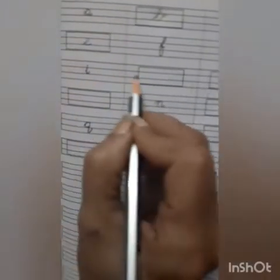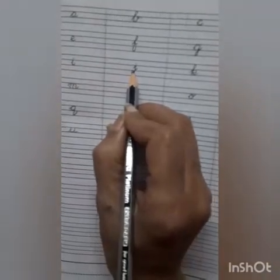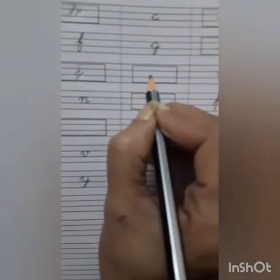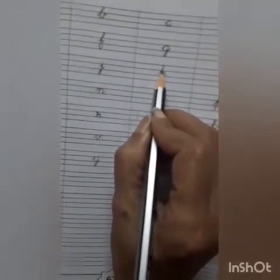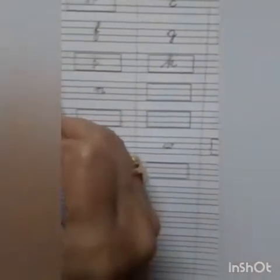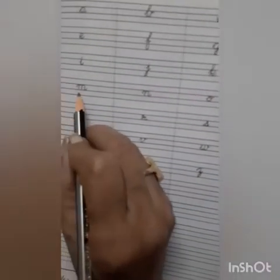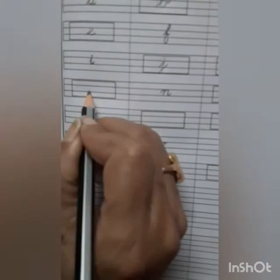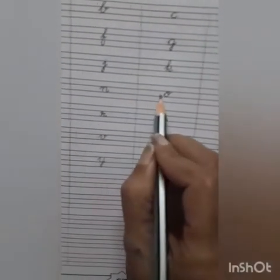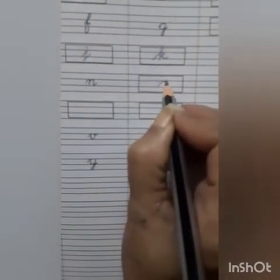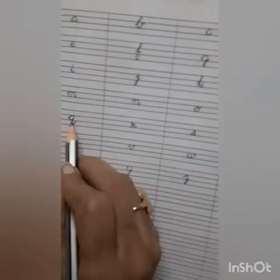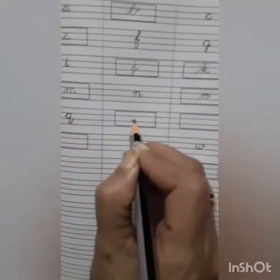H, I — which alphabet is missing? I, J. J is missing. Write J. Then J — which alphabet is missing? J, K. K is missing. Write K. Then L — which alphabet is missing? L, M. M is missing. Write M. Then M, N — which alphabet is missing? M, N, O is missing. Write O. Then P, Q — which alphabet is missing? Q, R. R is missing. Write R.